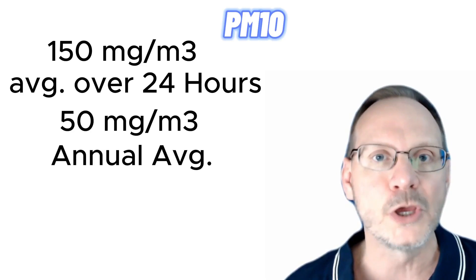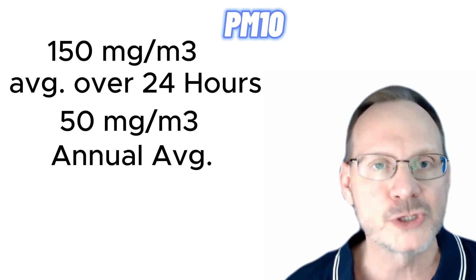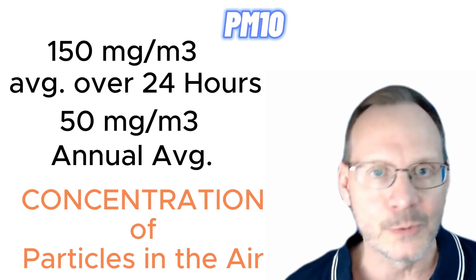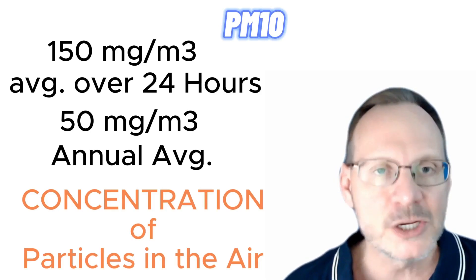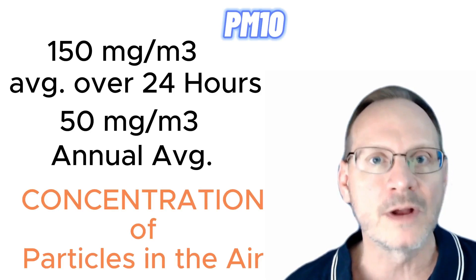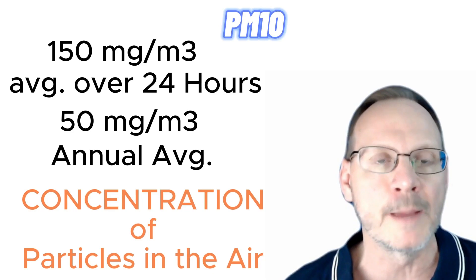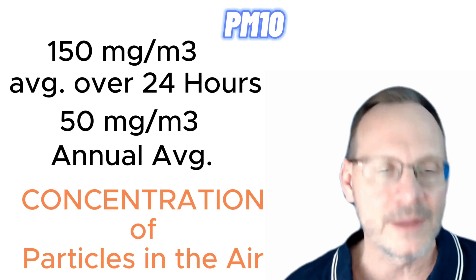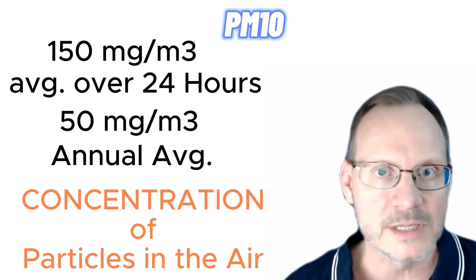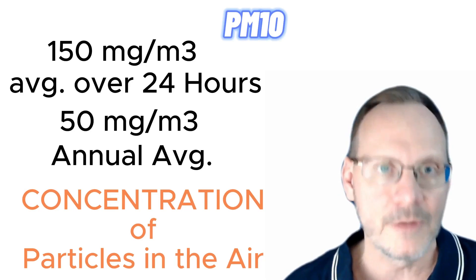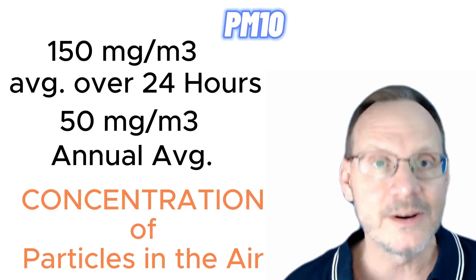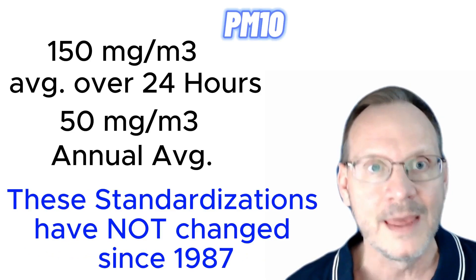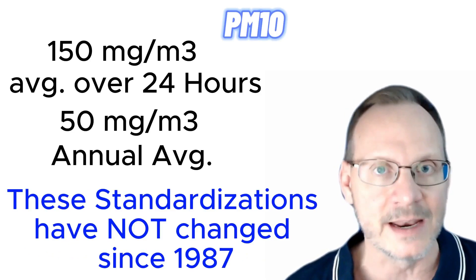A milligram per cubic meter is a unit of measure for concentration. Just know it's a measurement of particle concentration in air per cubic meter. The more particles in the air, the higher the concentration; the less particles in the air, the lower the concentration. Of note, these standardizations were set in 1987 for PM10, and they haven't changed since then. This is an important point and one we're going to come back to later.